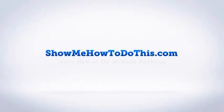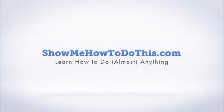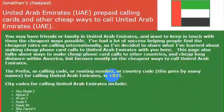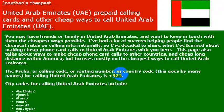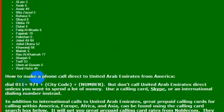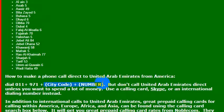To call United Arab Emirates, you will need the country code, which is 971. If you wanted to call from the United States, you would need the international dialing code from the U.S., which is 011 — that gets you an international line. Then you need the country code for United Arab Emirates, which is 971. Then you would dial the phone number, which probably has the city code included.